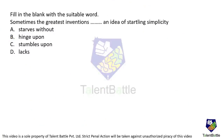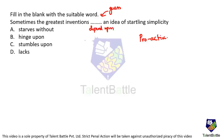Now let us try a sentence completion question: 'Sometimes the greatest inventions ___ an idea of startling simplicity.' Try to guess the answer before looking at the options. The greatest inventions basically depend upon an idea, or revolve around an idea. The options are: starves, hinge upon, stumbles, lacks.